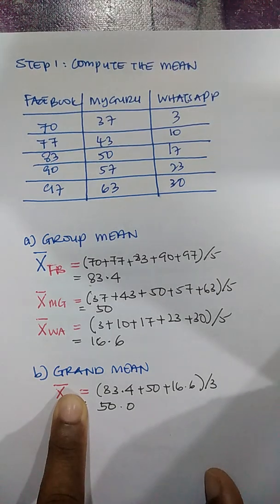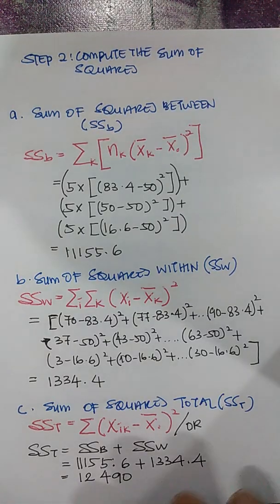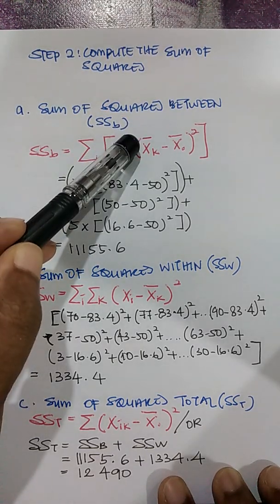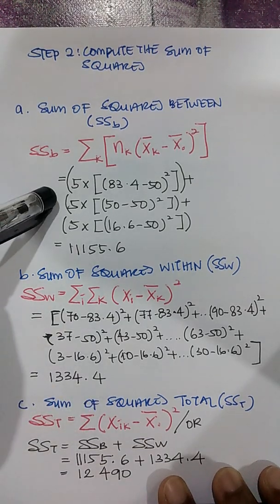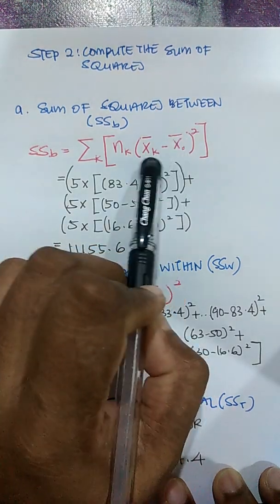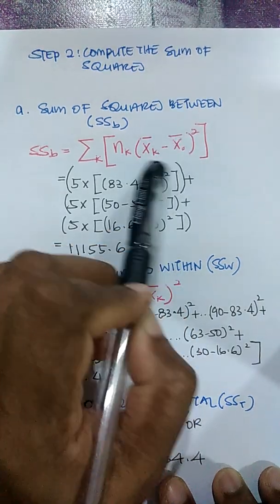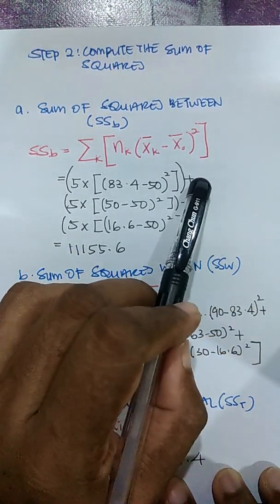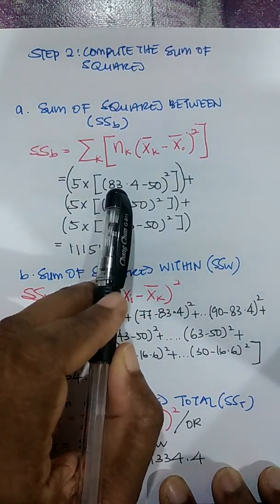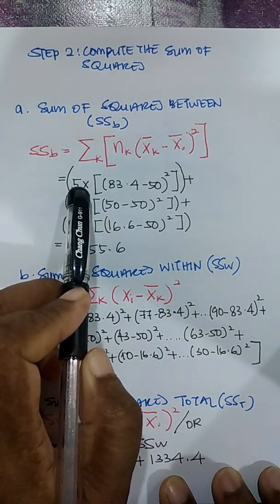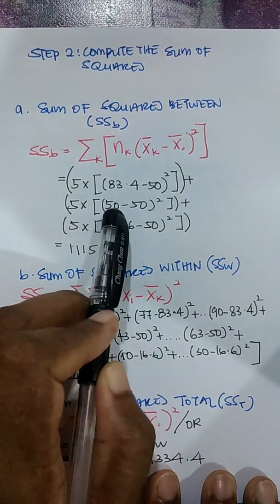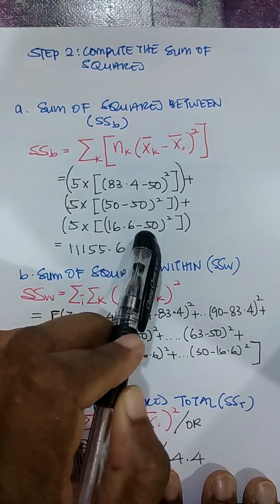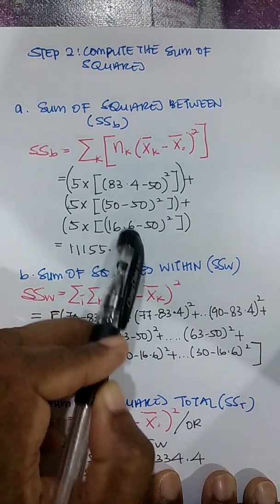The second step is to compute the sum of squares. There are three types: sum of squares between, sum of squares within, and sum of squares total. For sum of squares between, you take the group mean minus the grand mean, square it, multiply by the number of cases in that group, and add across all three groups. The first group mean was 82.4 minus 50 (the grand mean), squared, multiplied by 5, then repeated for the second group (mean 50) and third group. The total sum of squares between is 1155.6.